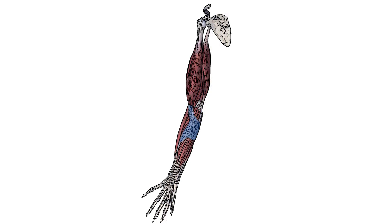You can see here highlighted in blue something called the bicipital aponeurosis, and depending on what book you read or who you talk to, this is considered by some to be a second insertion of the biceps brachii muscle. Now traditionally insertions connect muscles to bone, but in this case it's going to be connecting the muscle to the deep forearm fascia. It sits just medial to the radial tuberosity insertion.